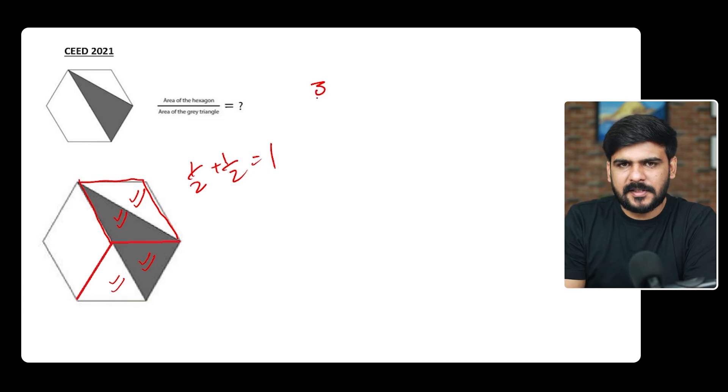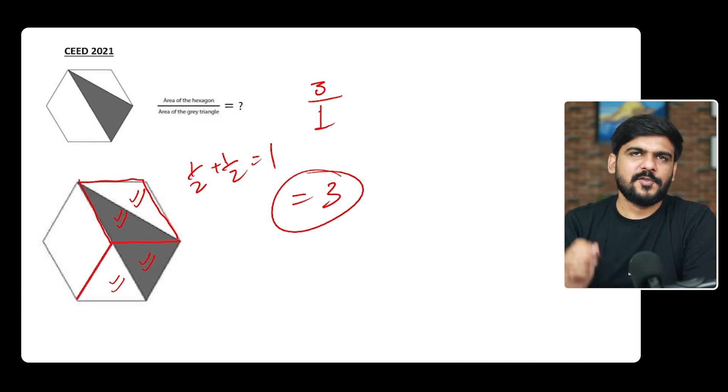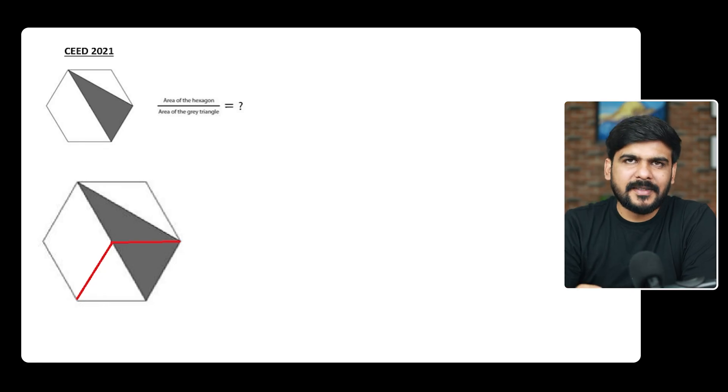So total shaded is 1 and total faces are 3, so 1:3 would be the answer. See, this question becomes really simple if you can visualize this thing. If you can visualize this as a cube, it is really very simple. You don't have to adjust anything, you don't have to imagine anything else. You just can directly see that shaded portions are two half portions of full faces. So that is how simply you can do it.